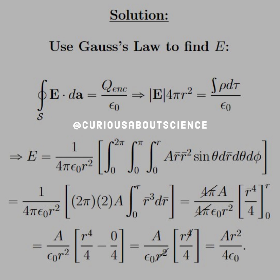Since we're integrating from 0 to r, we will put a bar over it and integrate out. Note that the θ and φ integrals again leave you with 2π and 2. A is just a constant, so you bring it outside the radial integral, and you're left with r³ dr. You see that now we have a bunch of cancellations — 4π cancels in both numerator and denominator — and we're left with the result of the radial integration, which is r⁴/4 evaluated from 0 to r. Simplifying leaves us with the electric field equal to ar²/(4ε₀).